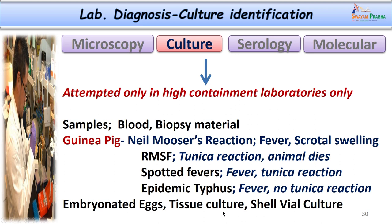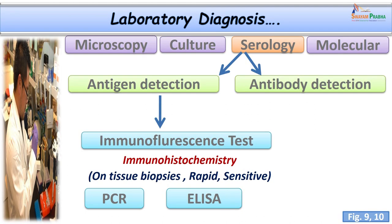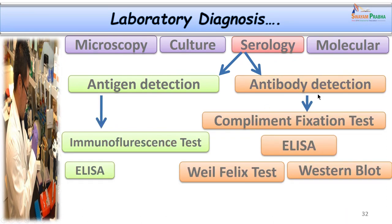We can also use embryonated egg tissue cultures and shell vial cultures to grow these organisms. For serological tests, we can go for antigen detection — immunofluorescence test, or immunohistochemistry for fixed tissue. These tests are rapid, highly sensitive and specific. We can also use PCR or ELISA for detecting rickettsial antigen. For antibody detection, tests include complement fixation test, antibody detection ELISA, Weil-Felix test and the Western blot test.